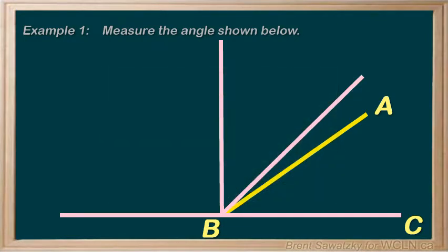Now we can see that our angle is between zero and 45 degrees, closer to the 45 degrees. So let's estimate that our angle is about 30 degrees.